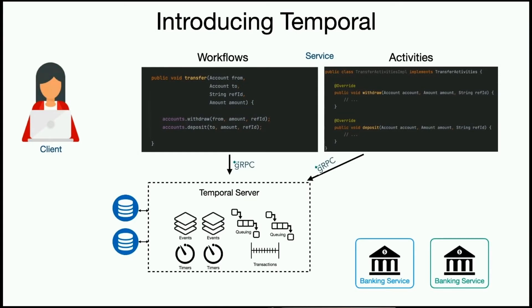Temporal is the solution to this problem. Temporal is an orchestration engine that allows you to write your orchestration as code — normal code in your programming language. The example I gave, the withdraw and deposit, you can write it exactly as-is: just call withdraw and deposit. Temporal has a service that executes that program, keeping state, timers, queues, and events, so you don't have to deal with failures yourself.